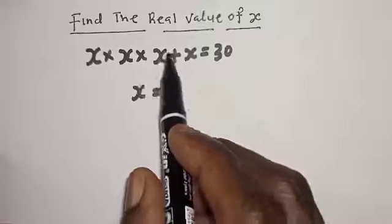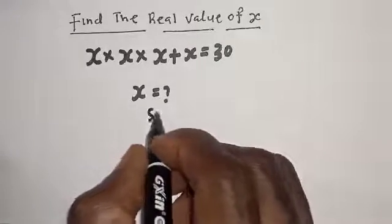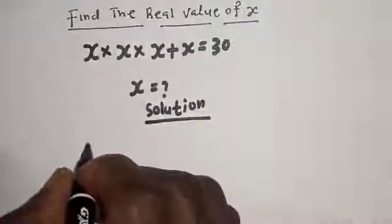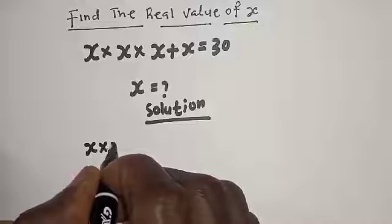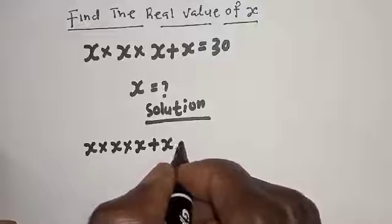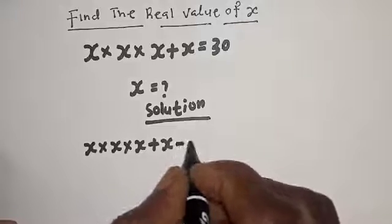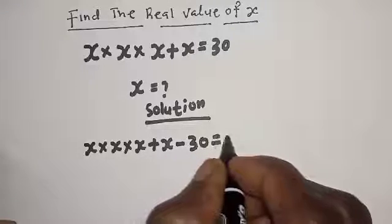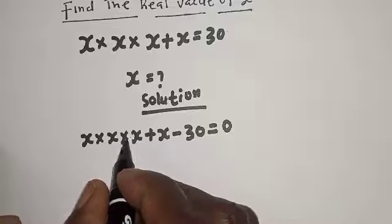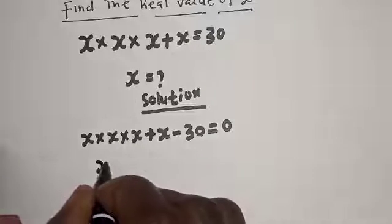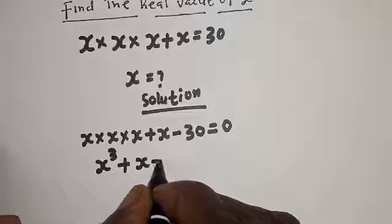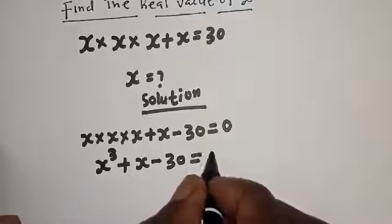Before we proceed, please don't forget to like, share, comment and subscribe. Solution: we have s multiplied by s multiplied by s plus s. If this 30 comes to this side it becomes minus 30, so s multiplied by s multiplied by s plus s minus 30 is equal to 0.